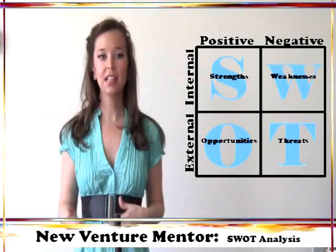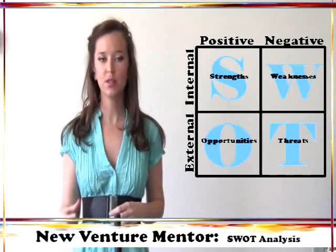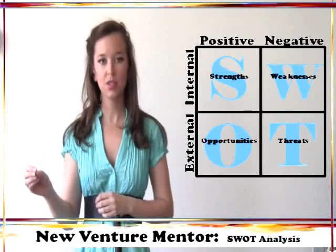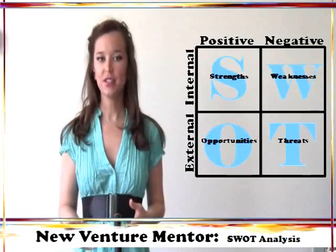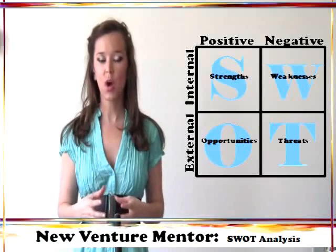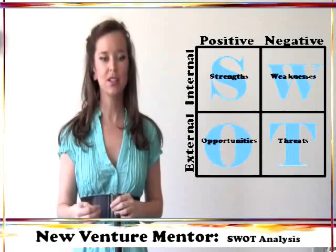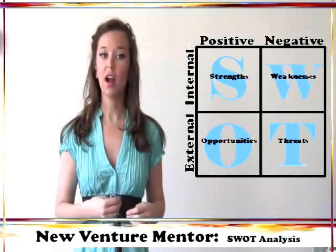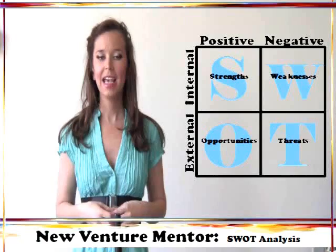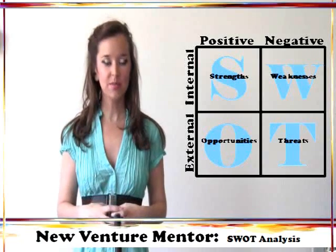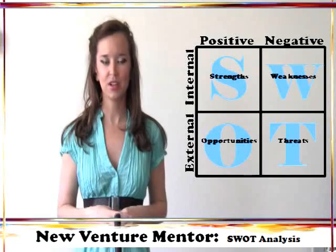To get started, let's create a SWOT Analysis chart. The SWOT Analysis chart is nothing more than a 2x2 set of squares with positives and negatives across the top and internal and external along the side. As you can see, this layout creates the SWOT Analysis box as follows: Strengths are internal positives, Weaknesses are internal negatives, Opportunities are external positives, and Threats are external negatives. This diagram provides the structure, and now all you need to do is brainstorm to fill in the various boxes and analyze your company's position.